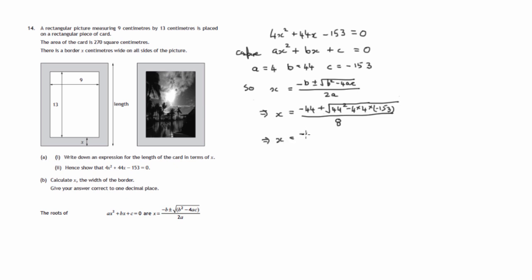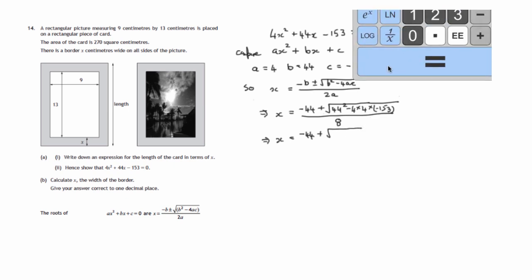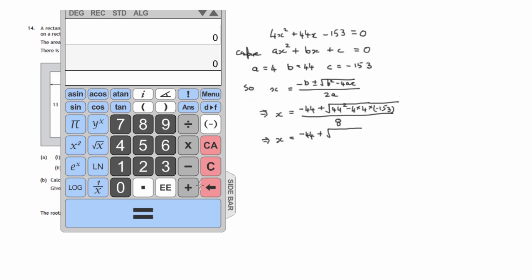So, values of x are given by negative 44 plus the square root of, and let's just work out what's under the square root sign just now. That's 44² and we're subtracting 4 times 4 times negative 153. That comes to 4384, and we have to divide that by 8.